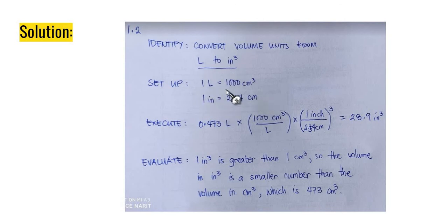The given here is 0.473 liters. You will convert this liter to cubic inch. And then, what are the given information? 1 liter equals to 1,000 cubic centimeter, and then 1 inch equals to 2.54 centimeters. 1 liter equals to 1,000 cubic centimeter, and then do the math, execute. 0.473 liters times, for every 1 liter, there is 1,000 cubic centimeter, times, for every 1 inch, there is 2.54 centimeter, but we have raised it to cube since we are looking for a cubic inch.